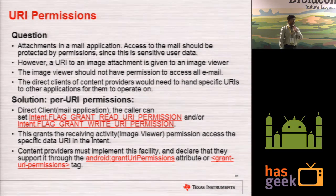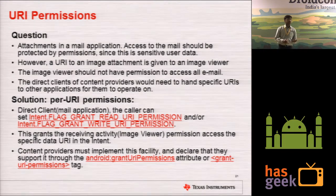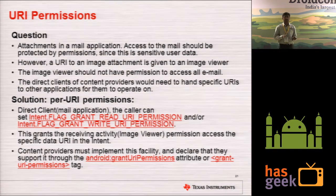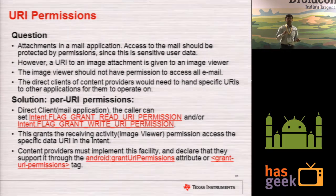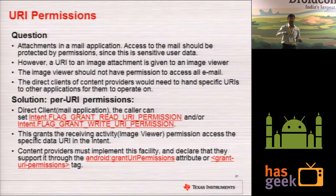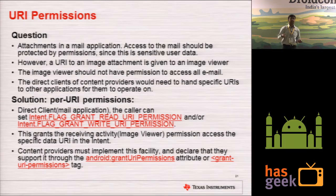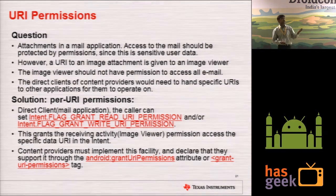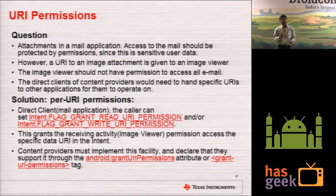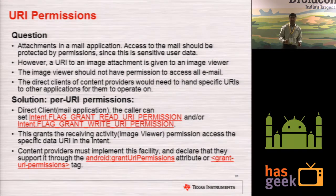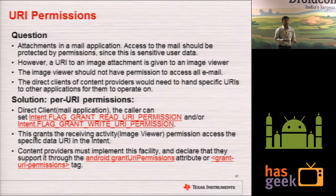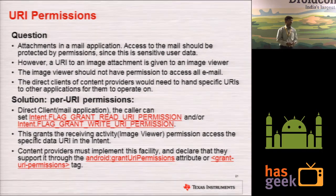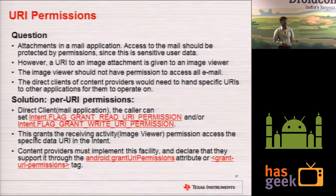There is something called URI permissions. Consider a mail application that doesn't have an image viewer — if the mail application has an attachment, it would hand over that URI (the path to a file) to the image viewer application. The image viewer should not access all mail content. To prevent that, Android introduced URI permission: when a mail application passes an intent to the image viewer, it can specify flags so that only that particular content provider URI path is accessible to the image viewer — not all mail content. Content providers must also support this.